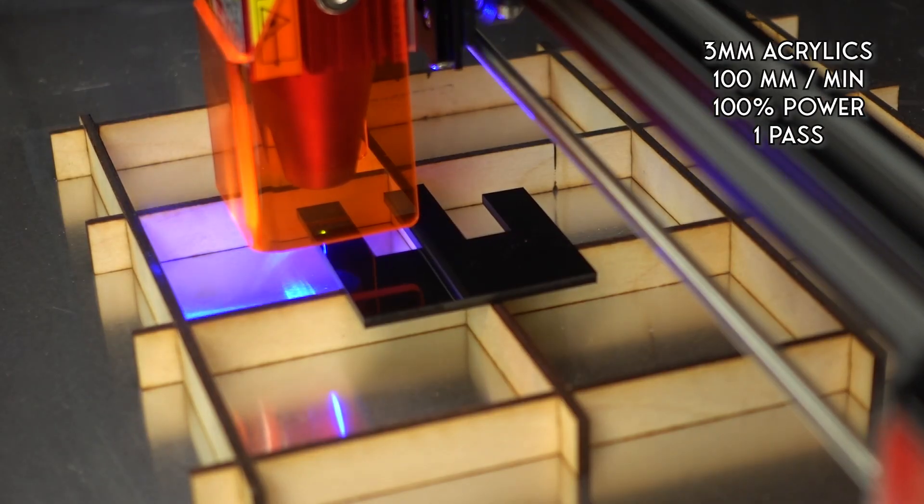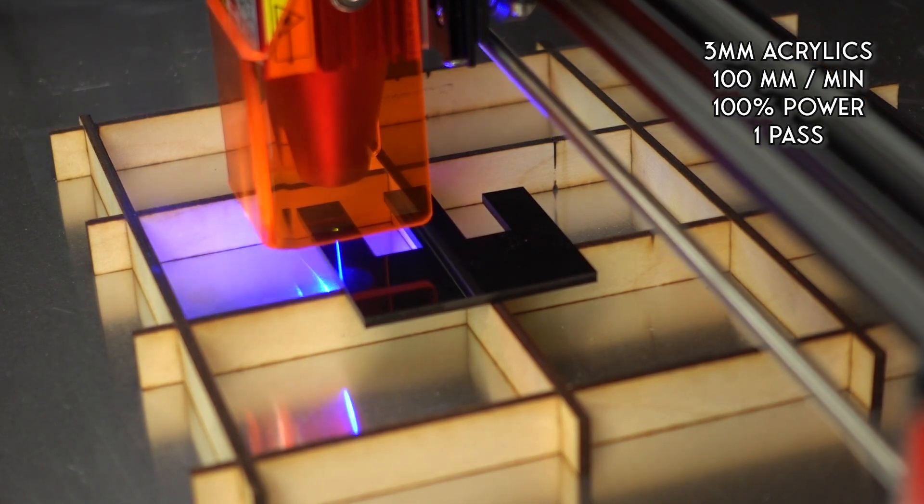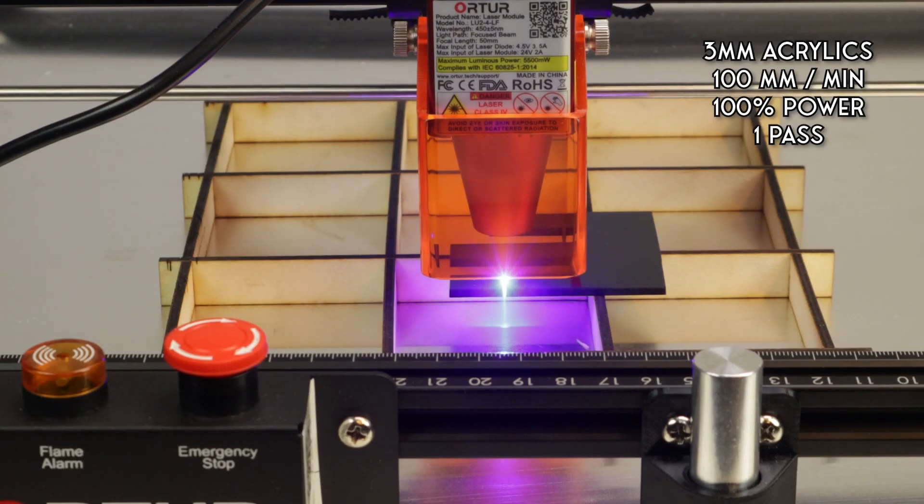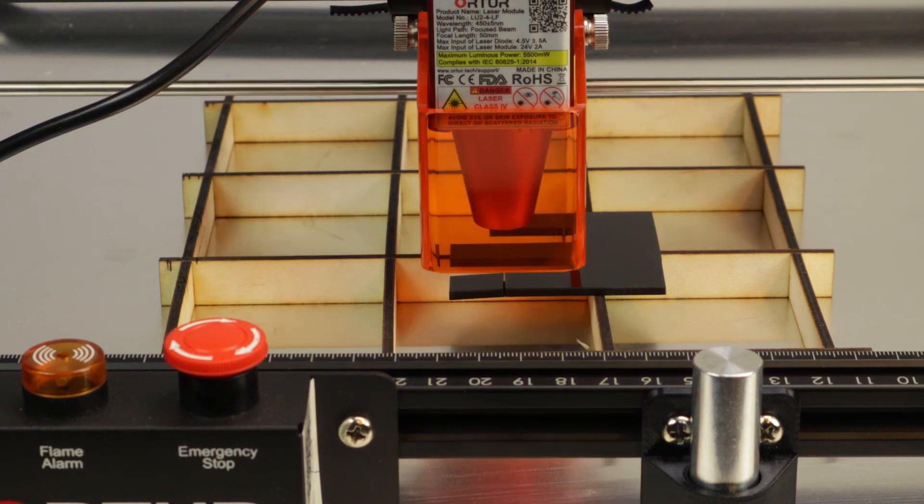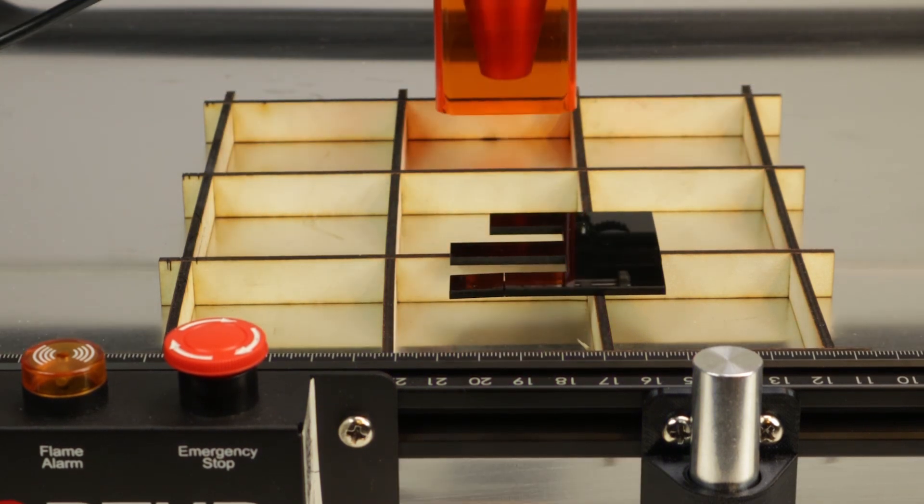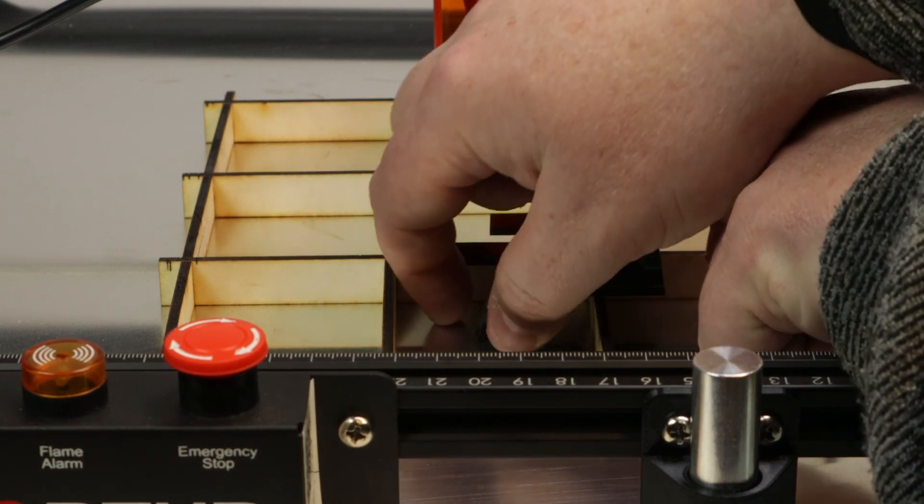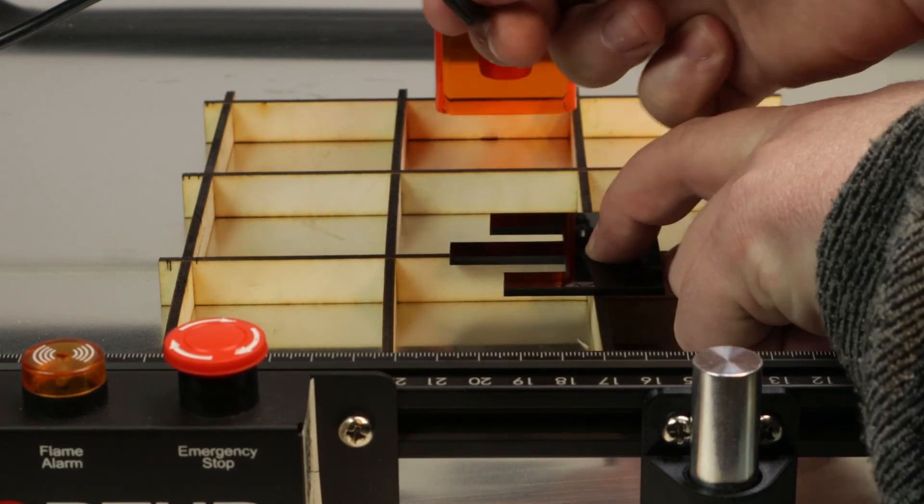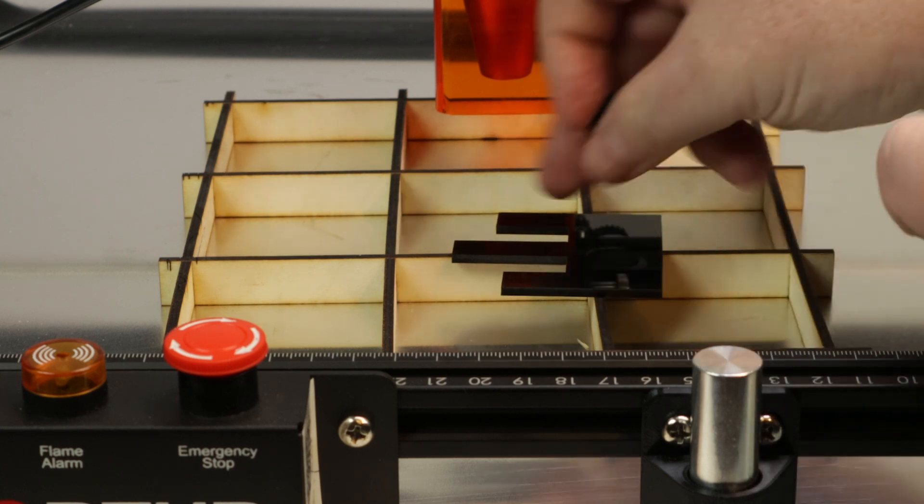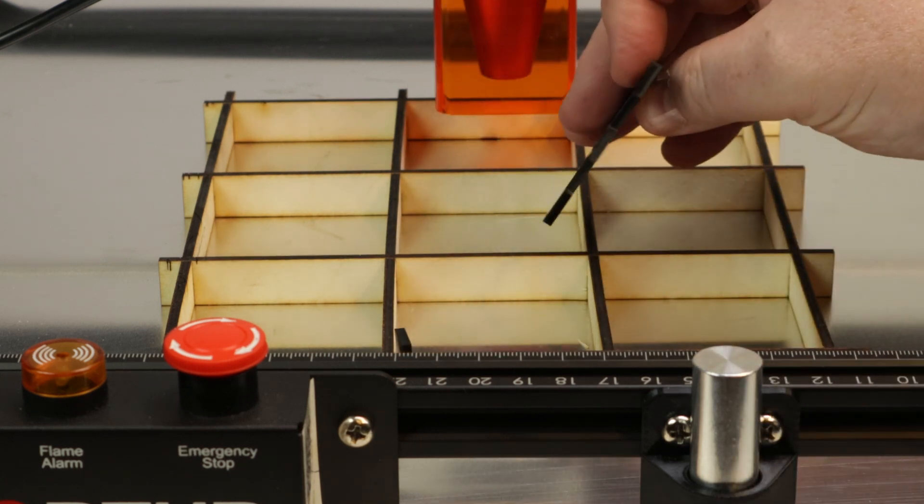We're cutting 3 millimeter black acrylics at 100% power, 100 millimeters per minute and one pass. The recommended settings are two passes for 5 millimeter, so we're hoping one pass will do. And by just touching the acrylics, it falls down. It left a very clean cut.